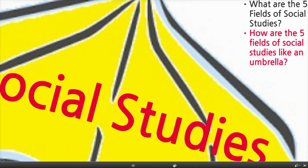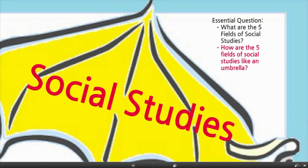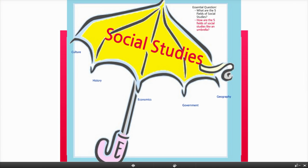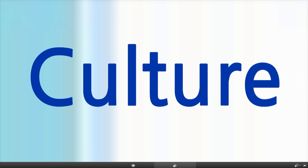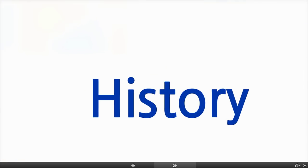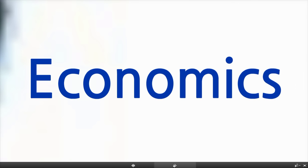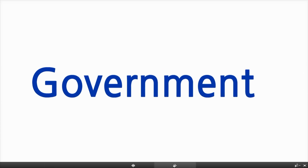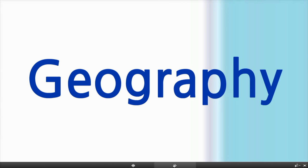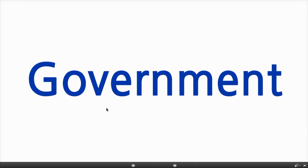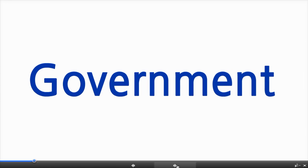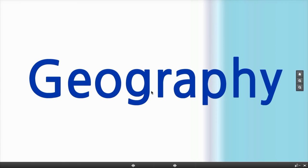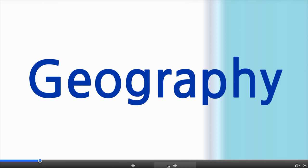Social Studies. This is the Prezi — yes, you have a link to the Prezi, so you don't have to watch the video again to get the information. The five fields of Social Studies are Culture, History, Economics or Economy, Government, and Geography. Please make sure in your book you wrote Government first and then Geography. I'll explain why later.